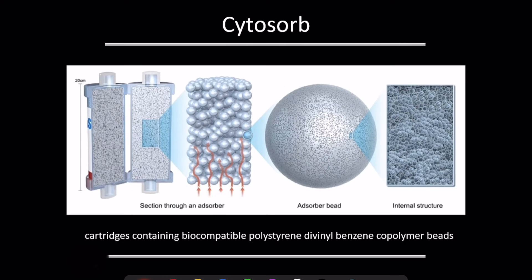Coming first to CytoSorb — this is essentially absorber beads which absorb cytokines. These cartridges contain biocompatible polystyrene divinylbenzene copolymer beads. Once blood flows through them, they absorb the cytokines and reduce their levels in the blood.